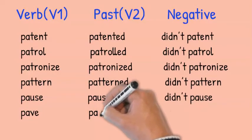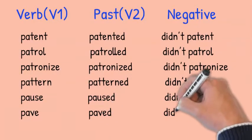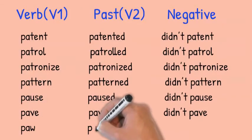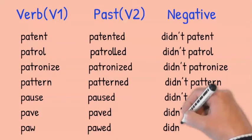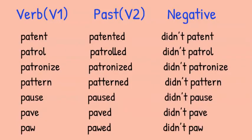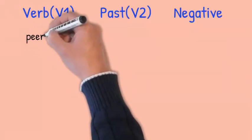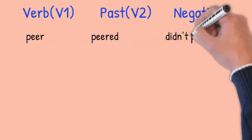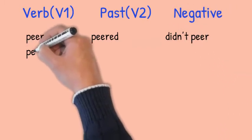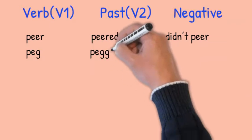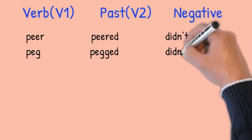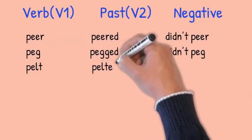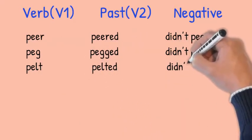Pave, paved, didn't pave. Paw, pawed, didn't paw. Peer, peered, didn't peer. Peg, pegged, didn't peg. Pelt, pelted, didn't pelt.